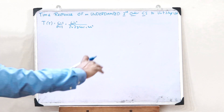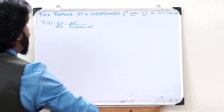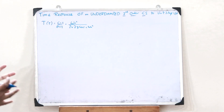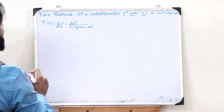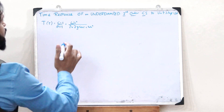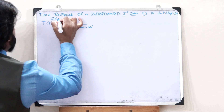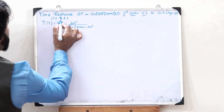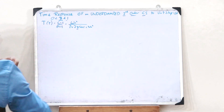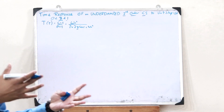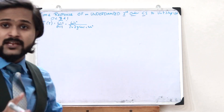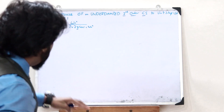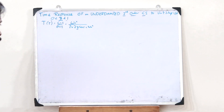Here we have an under-damped second-order control system. The speciality of an under-damped second-order control system is that the value of zeta lies in between 0 and 1. So 0 < ζ < 1 — it might be 0.2, 0.75, 0.89, or even 0.99.